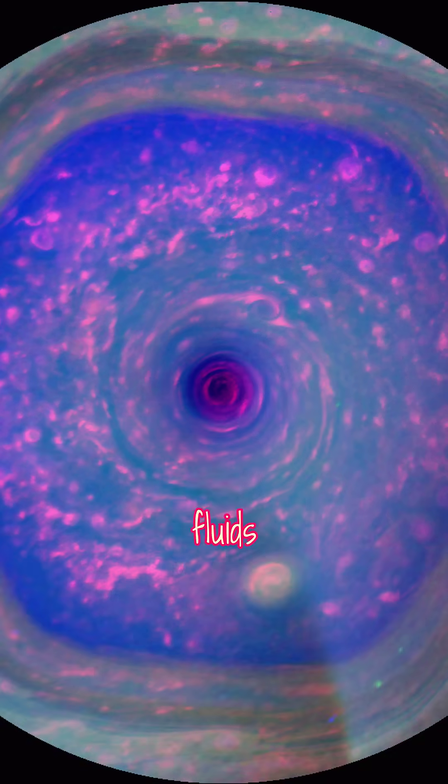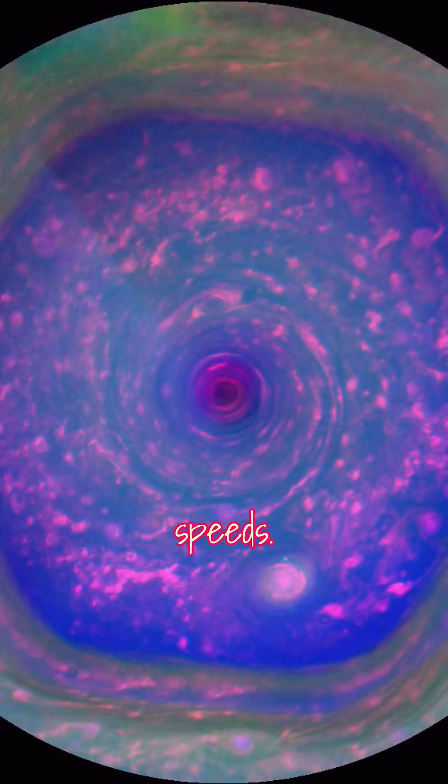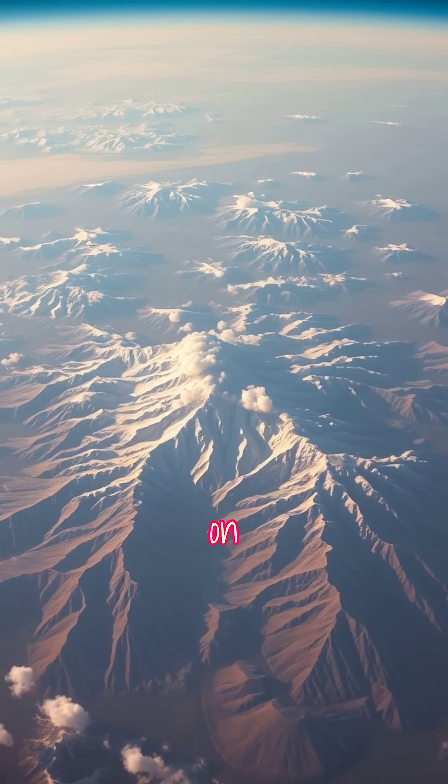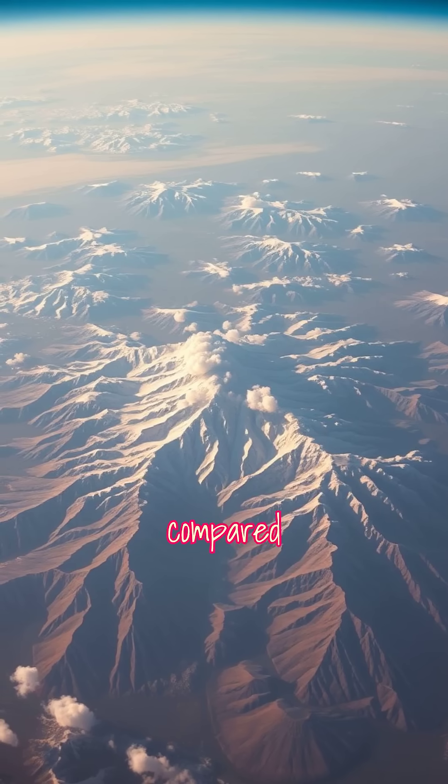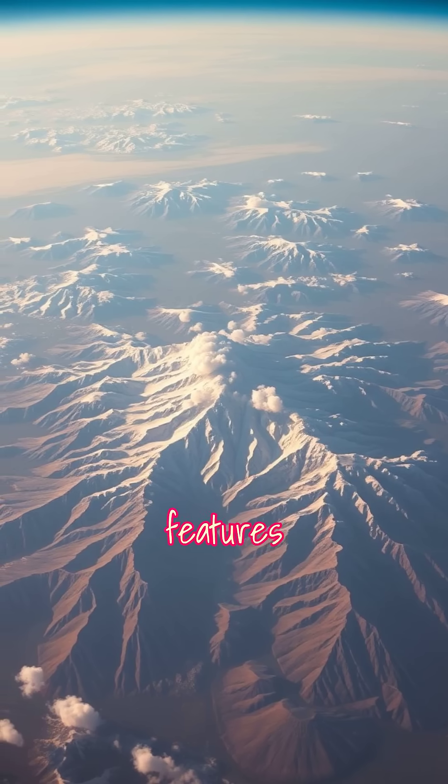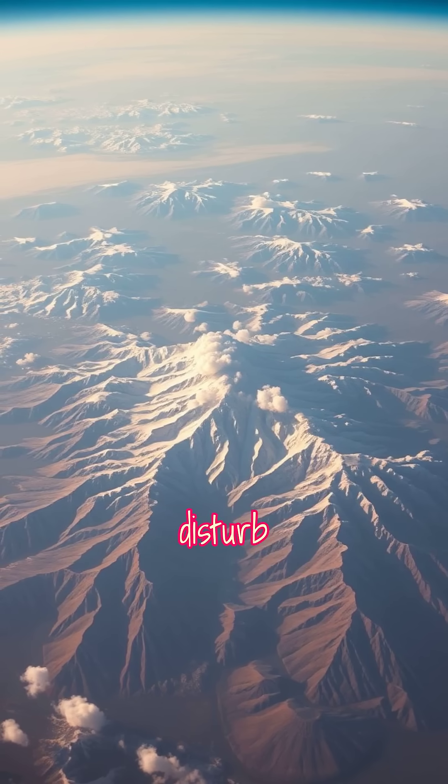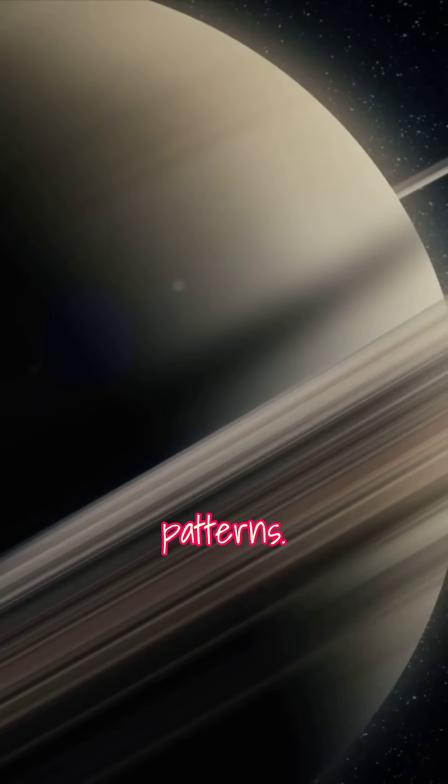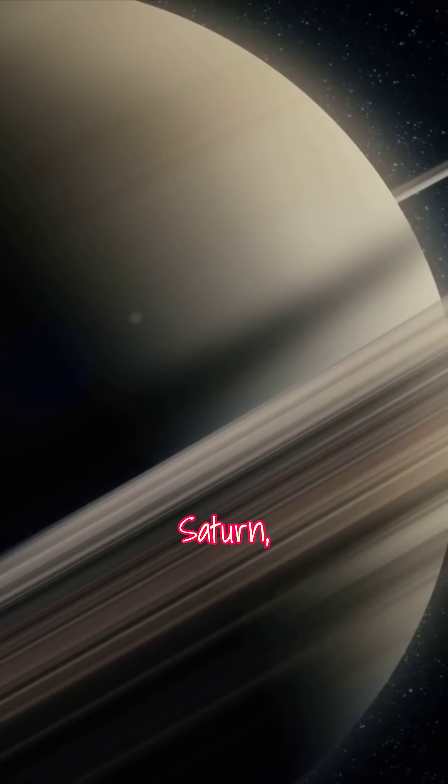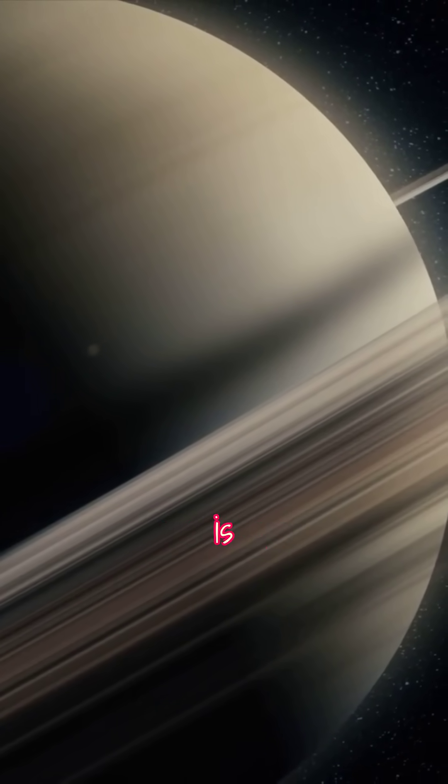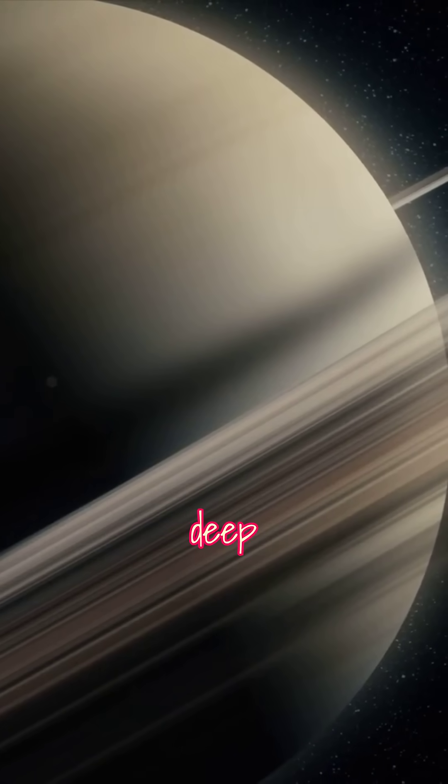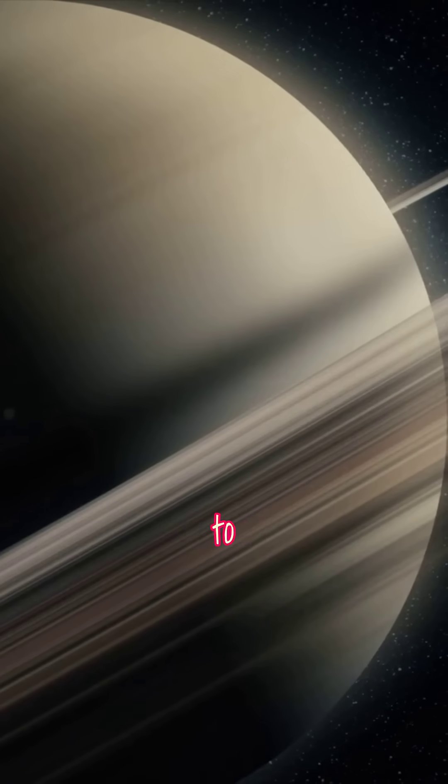See, on Earth, the atmosphere is shallow compared to Saturn's, and features like mountains and oceans disturb any regular patterns. But on a gas giant like Saturn, the atmosphere is thousands of kilometers deep, and there are no surface features to disturb the flow.